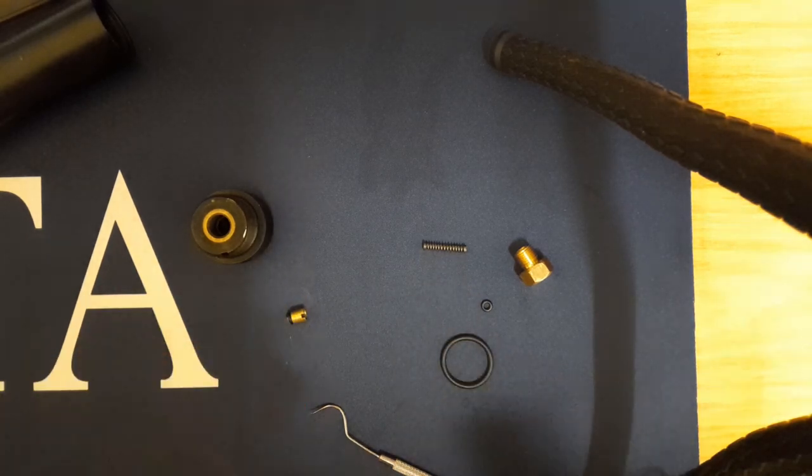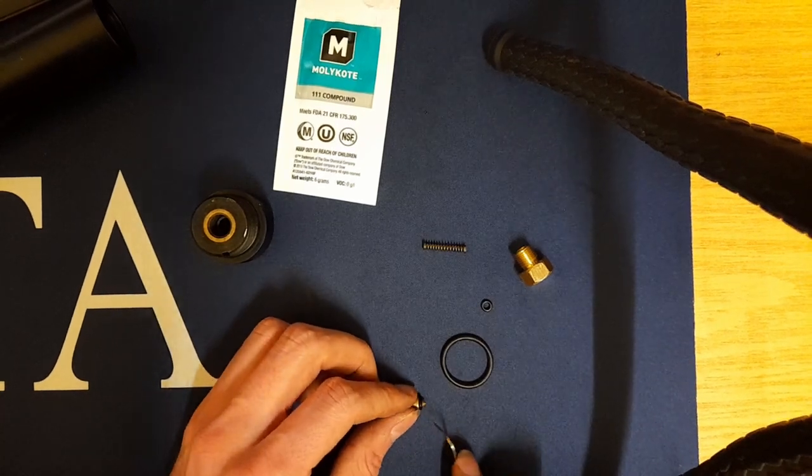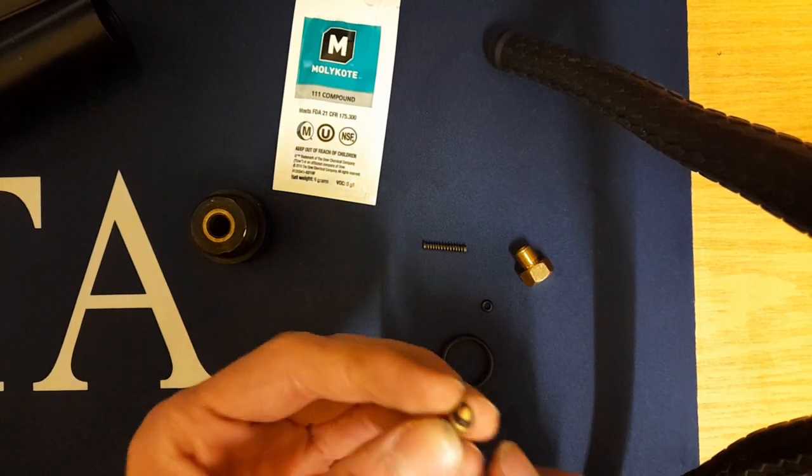So we've got our new o-rings here and what we're also going to use is a little smidgen of molly coat. To remove the o-ring I generally use an o-ring pick - it can be quite difficult sometimes.